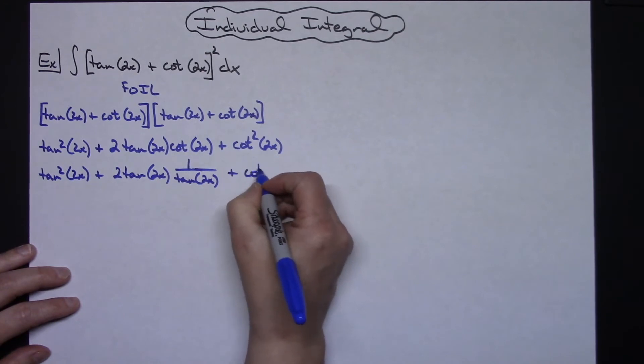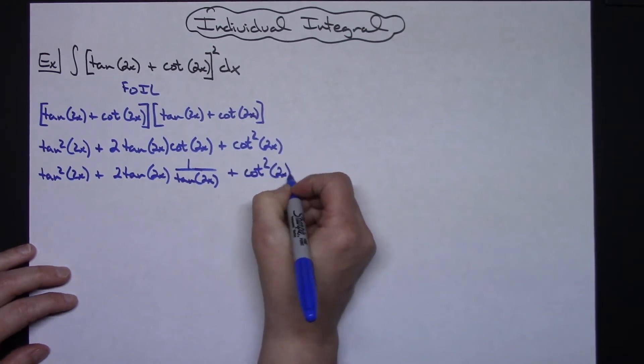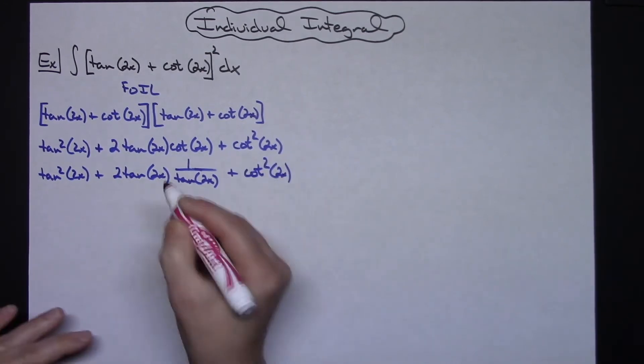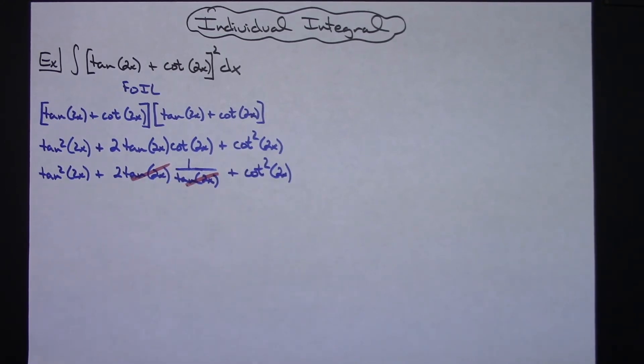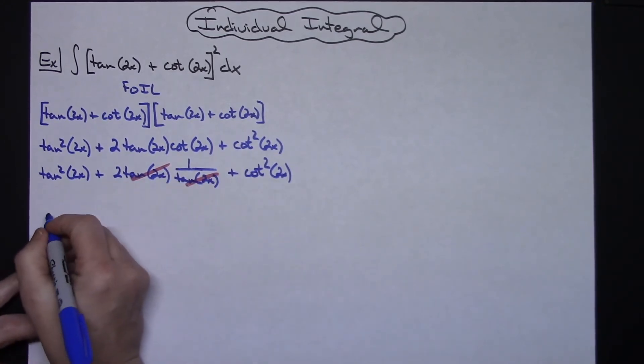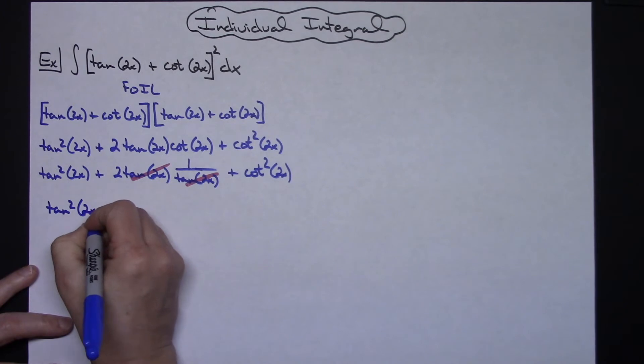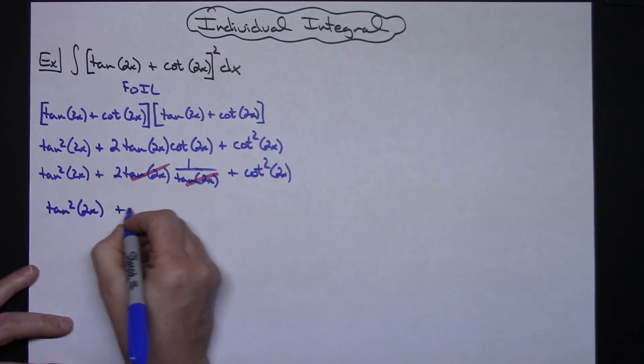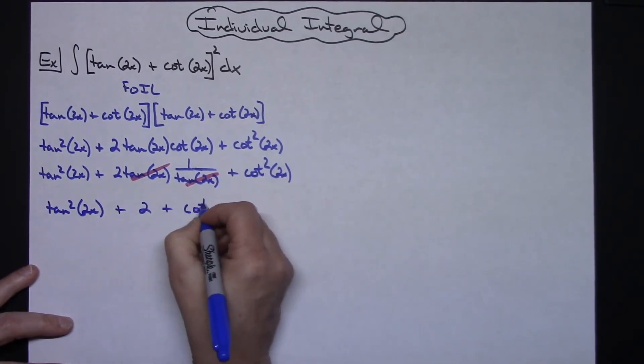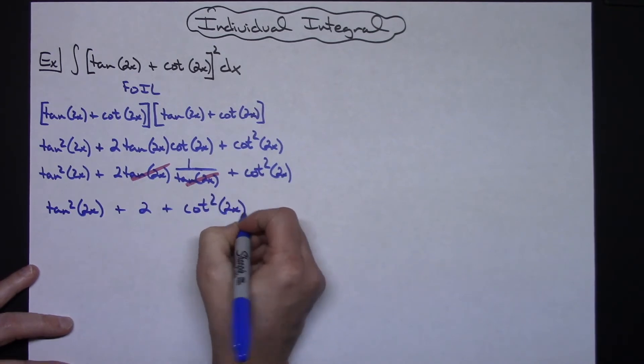Last term there on the end will be cotangent squared of 2x. Alright, so hopefully you realize that the tangent of 2x there crosses out. So rewriting now I'm going to have the tangent squared of 2x plus the 2 that was left in the middle plus the cotangent squared of 2x.